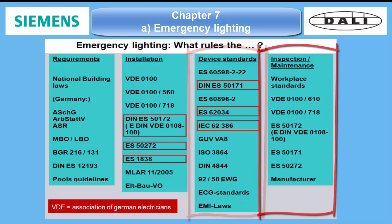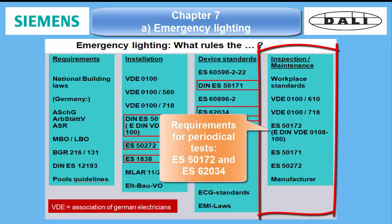The fourth group covers all regulations which deal with inspection and maintenance for such systems. EN 5172, for example, mentions the requirements for the periodical tests, which are described more precisely in EN 62034.